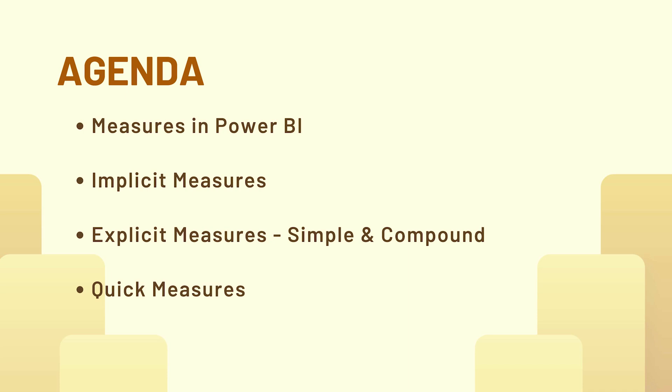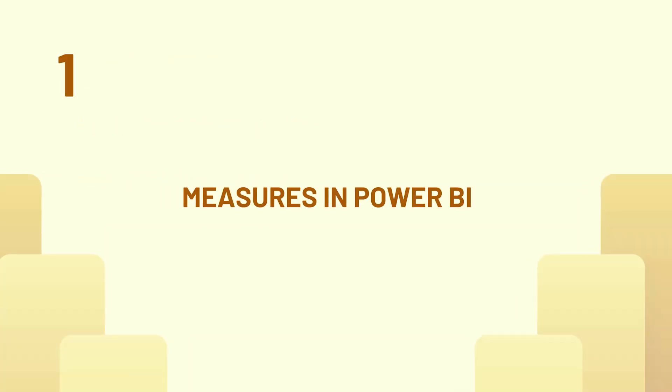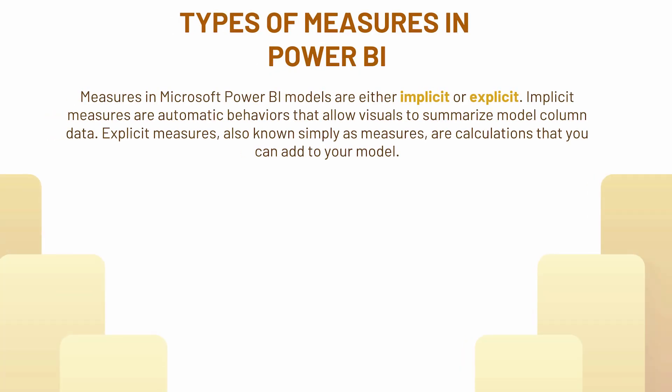In today's video, first we are going to work on measures in Power BI, then we'll get to know what are implicit and explicit measures, and at last we'll have a look at quick measures with a demo. So what are measures in Microsoft Power BI? In Power BI you have to do a lot of calculations, and for advanced analytics you need to perform certain calculations using DAX — Data Analysis Expressions — which is a formula-based language. There are two kinds of measures: implicit and explicit.